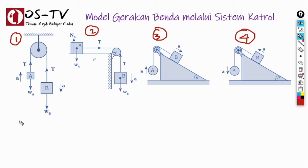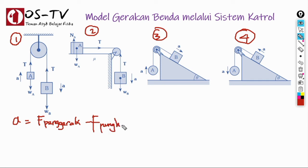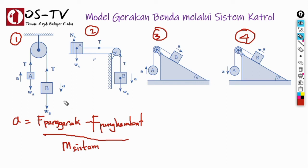Untuk semua model gerakan benda melalui sistem tali katrol, berlaku persamaan bahwa percepatan sistem sama dengan gaya penggerak dikurangi gaya penghambat, dibagi dengan massa sistem atau jumlah massa benda-benda yang berada di dalam sistem. Pada kasus 1, gaya penggeraknya adalah WB atau berat benda B karena WB searah dengan percepatan A, sementara WA merupakan gaya penghambat karena berlawanan dengan arah percepatan A.